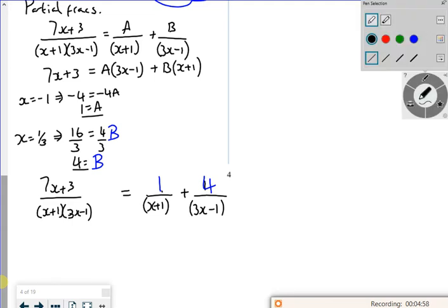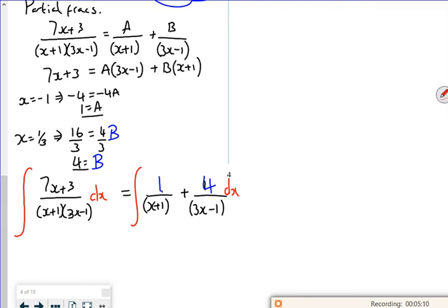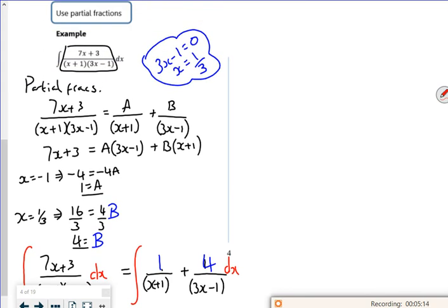There. So what I'm doing, those partial fractions, I'm now going to integrate them. So the first one is a log. If I differentiate the bottom, it is the top. What I've got is a 1, what I want is a 1, so it's just the log of x plus 1. I'm going to use a modulus bracket, be all technical.